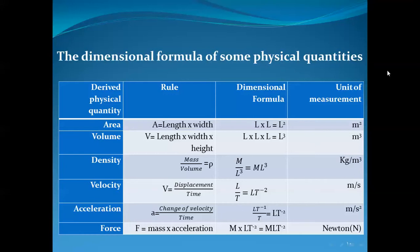First: area. Area equals length multiplied by width. Using the symbol L for both length and width, area equals L times L, which equals L squared. The dimensional formula for area is L². The unit of length is the meter, so the unit of measuring area is meter squared.